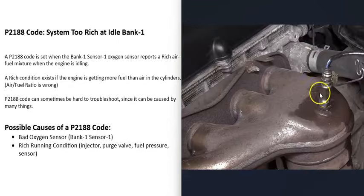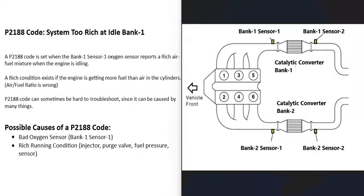The first possible cause is that the Bank 1 Sensor 1 O2 sensor has gone bad and is reporting bad information to the computer, making it think there's a problem when there isn't. There are typically two O2 sensors on each bank. Sensor 1 is located before the catalytic converter — also called the upstream O2 sensor. Sensor 2 is located after the catalytic converter and is called the downstream O2 sensor.